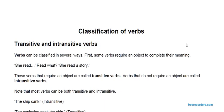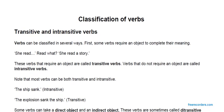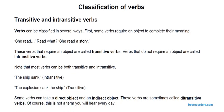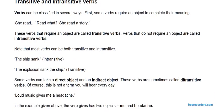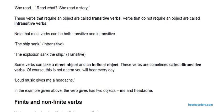Verbs that do not require an object are called Intransitive Verbs. Note that most verbs can be both Transitive and Intransitive. For example, 'The ship sank' is Intransitive because 'sank' itself is the verb and it denotes the action — it implies complete meaning. 'The explosion sank the ship' is Transitive.